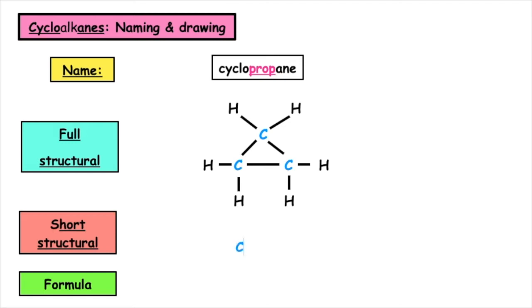So the shortened structural formula is CH2CH2CH2. In a ring, there's no start and there's no end, so it doesn't matter what side you start at as long as it does not have a branch. The formula then is when we add up all of the carbons and all of the hydrogens, we end up with C3H6.